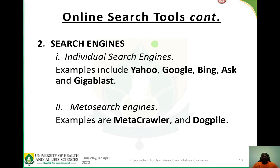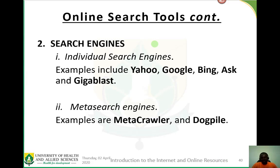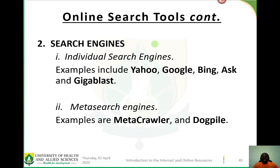Meta search engines are search engines about search engines. A meta search engine like MetaCrawler or Dogpile allows you to submit a single query and draw results from several individual search engines. Unlike individual search engines, meta search engines do not compile their own databases of indexed terms. Individual search engines like Yahoo, Google, and Bing scout the internet and index new web pages, whereas meta search engines submit your query to multiple individual engines and aggregate their results.